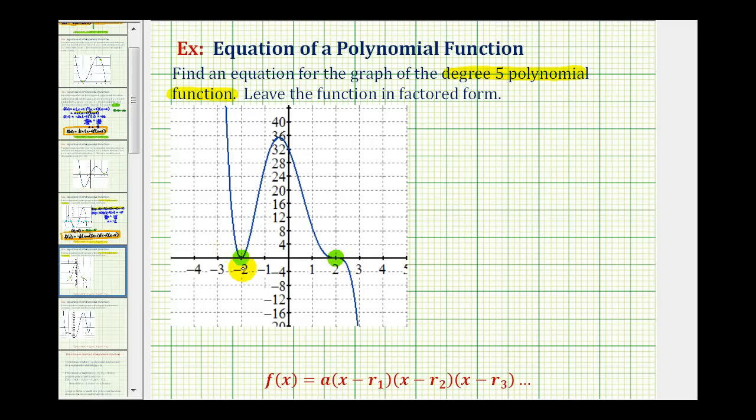Looking at the x-intercept or zero of negative two, notice how it touches the x-axis but does not cross the x-axis. That means this root or zero must have an even multiplicity. So we'll go ahead and assume it has multiplicity two.